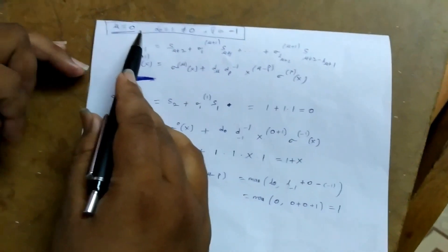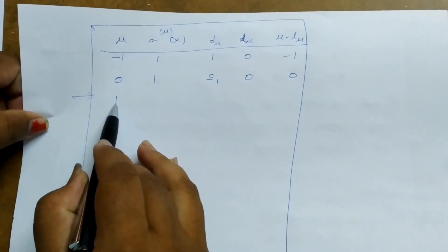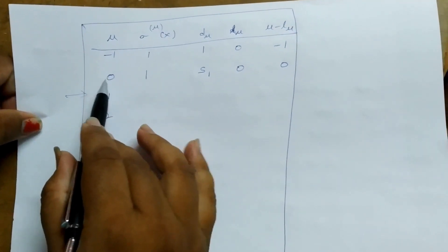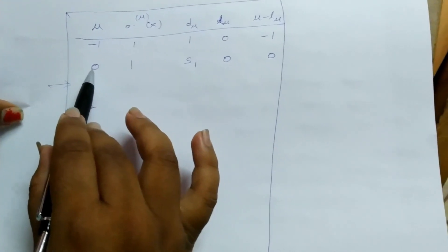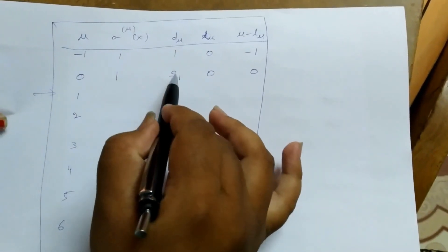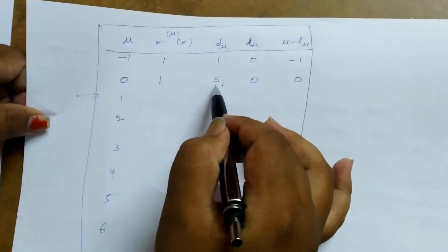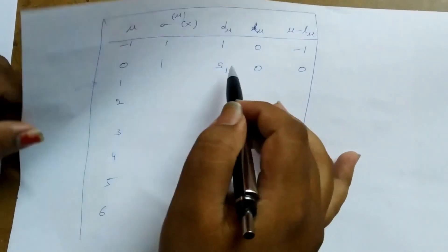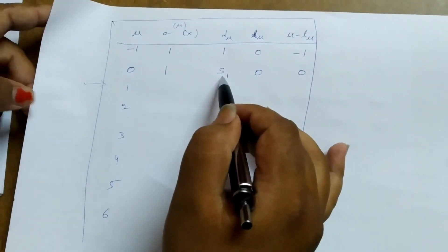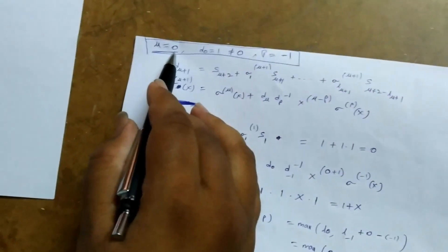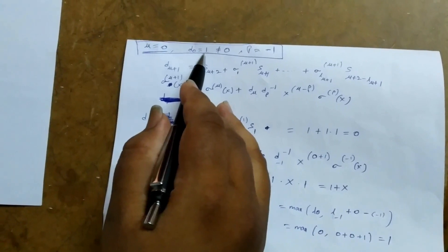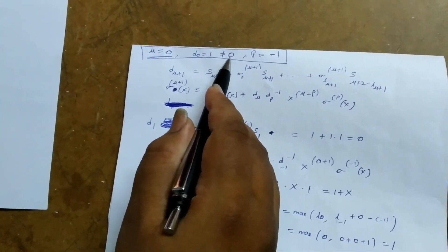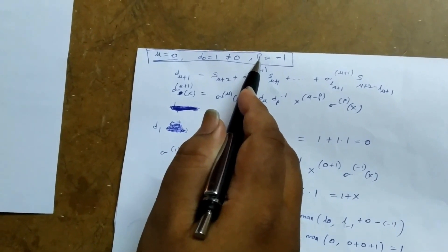Our wish is to find the elements for μ=1. To find elements corresponding to μ=1 we start with μ=0, so all calculations are based on the d_μ value. According to the algorithm, d_μ equals s1, so we take μ=0 as the step. The d_0 value is s1, and here this value is 1, which is not equal to 0, so we have to take a ρ value.